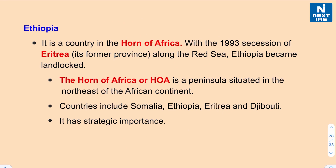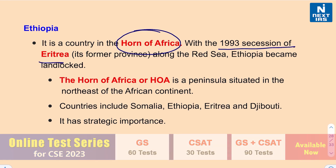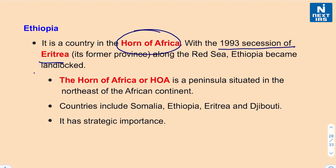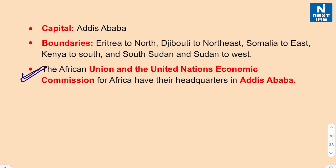Ethiopia is a part of the Horn of Africa region. With the 1993 secession of Eritrea — formerly a province of Ethiopia — Ethiopia became landlocked. The Horn of Africa is a peninsula in the northeast of the African continent. It includes the countries of Somalia, Eritrea, Ethiopia, and Djibouti — remembered with the mnemonic SEED. This region is strategically very important. Also, Addis Ababa is significant as both the African Union and the United Nations Economic Commission for Africa have their headquarters there.